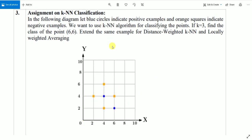The blue points indicate the positive classes and orange squares indicate negative examples. We have to detect the class of point (6,6). So (6,6) will fall somewhere right here, and we have to determine the class of this point, whether it belongs to positive examples or negative examples.